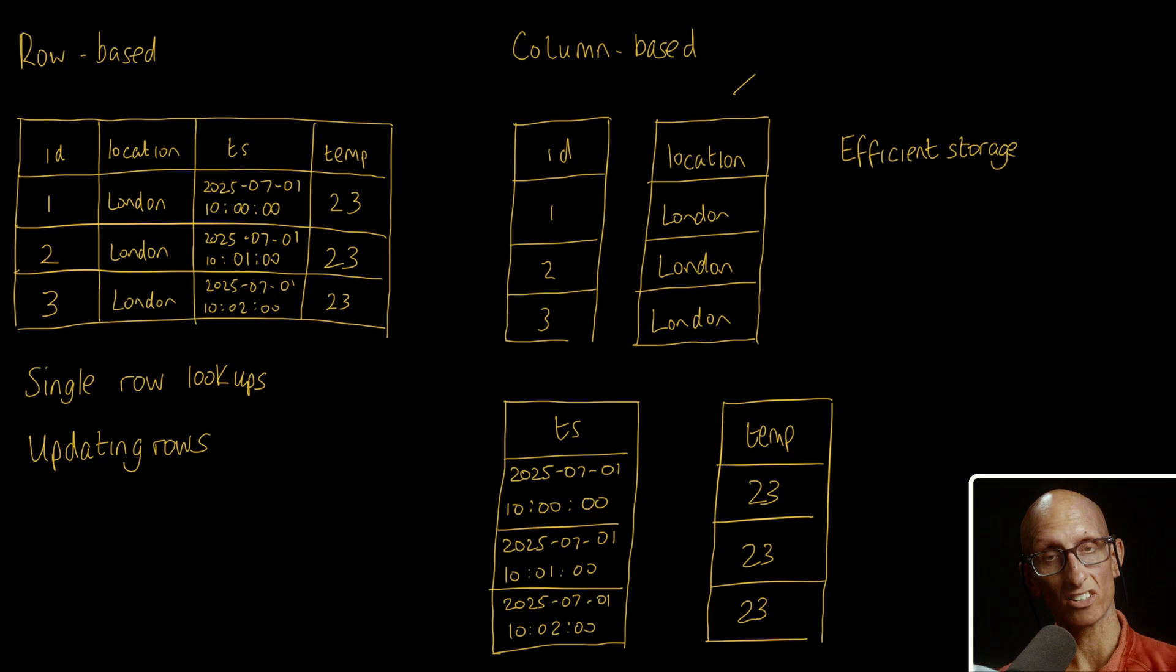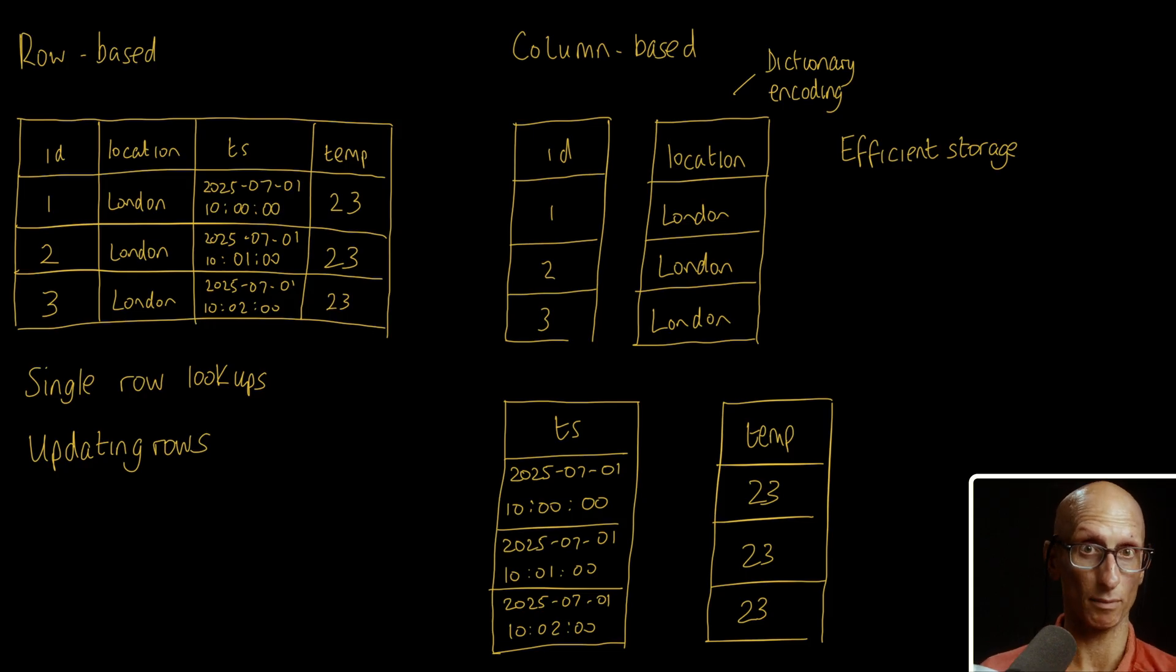So for example, we could use dictionary encoding for the locations, where each location string maps to a number. And then we could store those numbers in the column instead, taking up less space. And then at query time, we'll map back from the numbers to strings before showing the result.